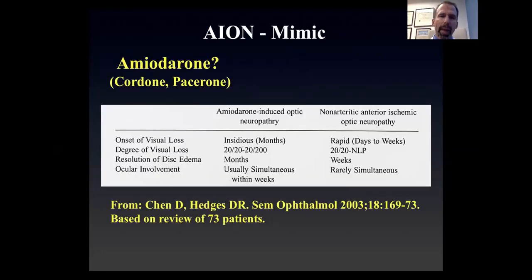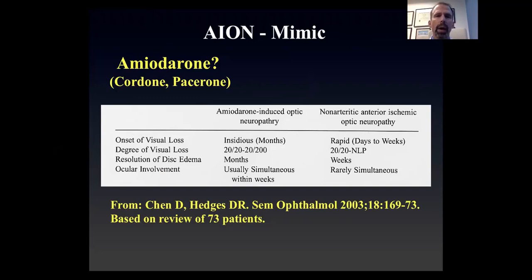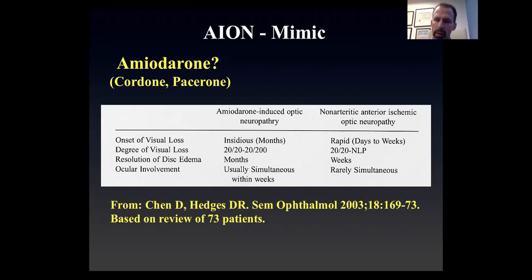There was one publication looking at differentiating amiodarone-induced optic neuropathy from NAION. In general, the vision loss with amiodarone isn't quite as bad, the disc swelling can last for months given the 100-day half-life of amiodarone, and it's often bilateral. Trade names include Cordarone and Pacerone.